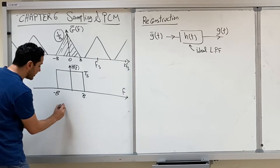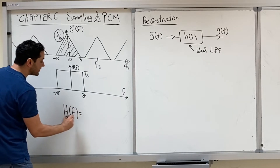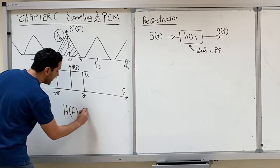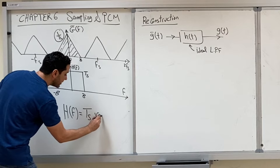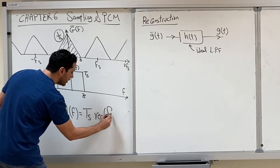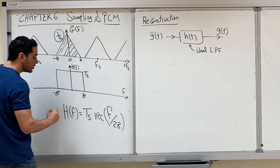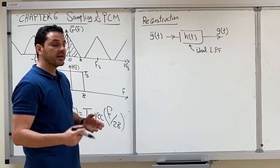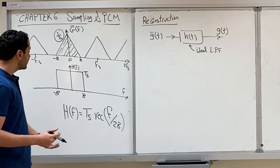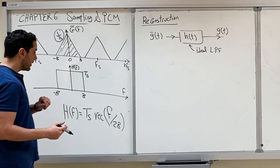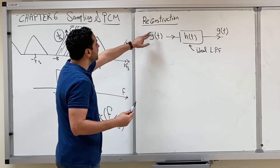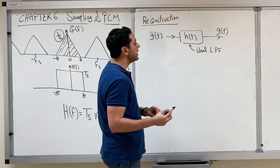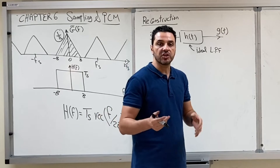Our ideal low-pass filter in the frequency domain can be written as TS · Rect(f / 2B). This is how our ideal reconstruction filter looks: an ideal low-pass filter with amplitude TS and sharp edges. If we pass our sampled signal G-bar of T through this filter, we are going to get the original signal.